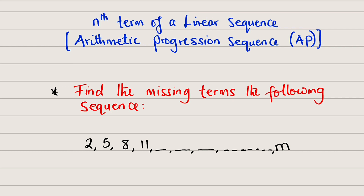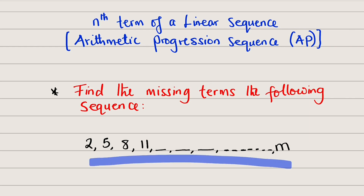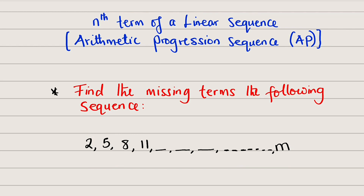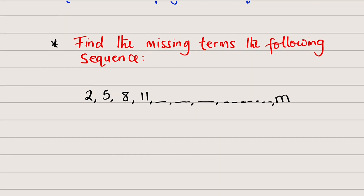We are given a question here where we are asked to find the missing terms of the following sequence. The sequence gives us the first term as 2, second term as 5, third term as 8, fourth term as 11, and three subsequent missing terms including the last term, and we want to find all of these missing terms.